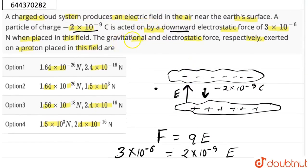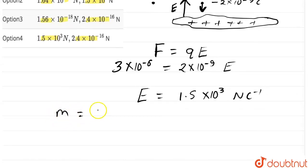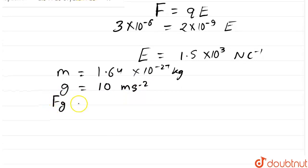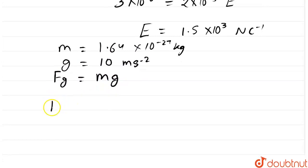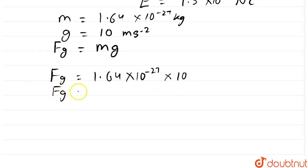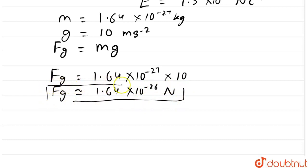Our question asks for the gravitational and electrostatic force respectively. First, we calculate the gravitational force when a proton is placed in this field. The mass of the proton is approximately 1.64 into 10 to the power minus 27 kilograms, and acceleration due to gravity is approximately 10 meters per second squared. The gravitational force Fg = mass × g, so Fg = 1.64 × 10 to the power minus 27 × 10, which is approximately 1.64 into 10 to the power minus 26 newtons. This is the gravitational force on the proton.